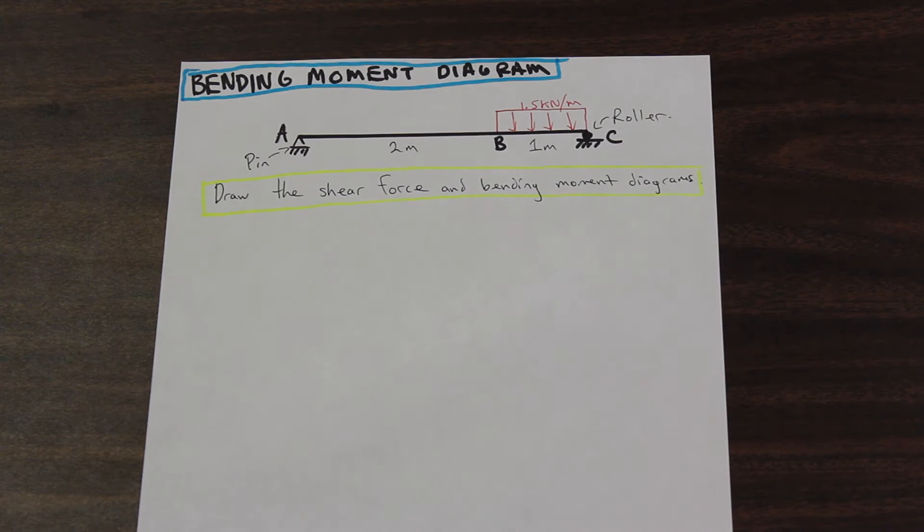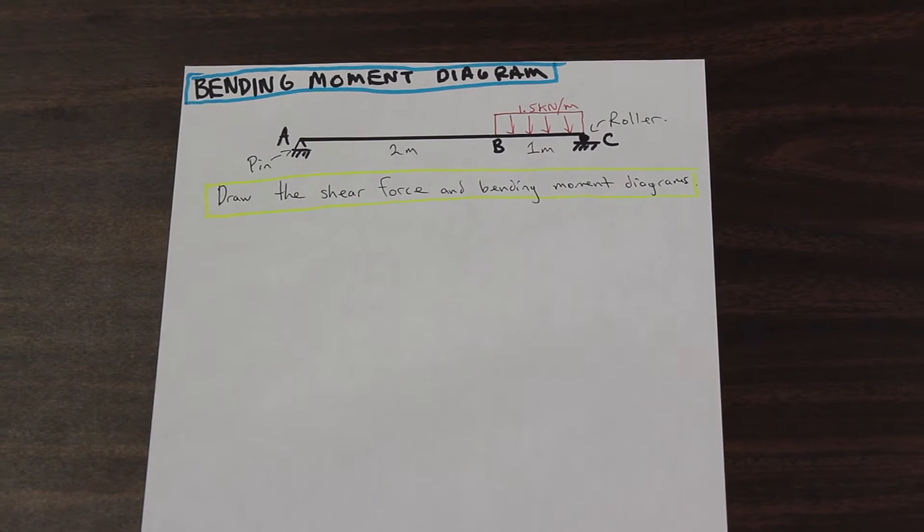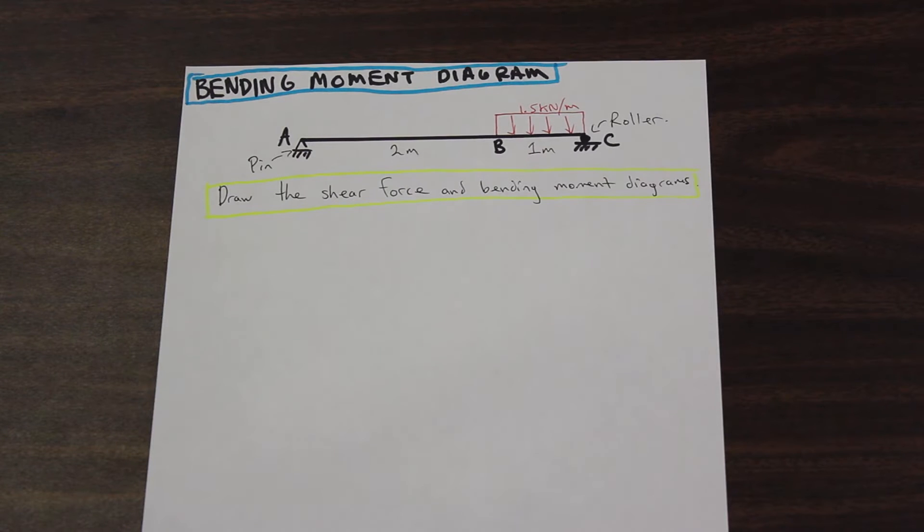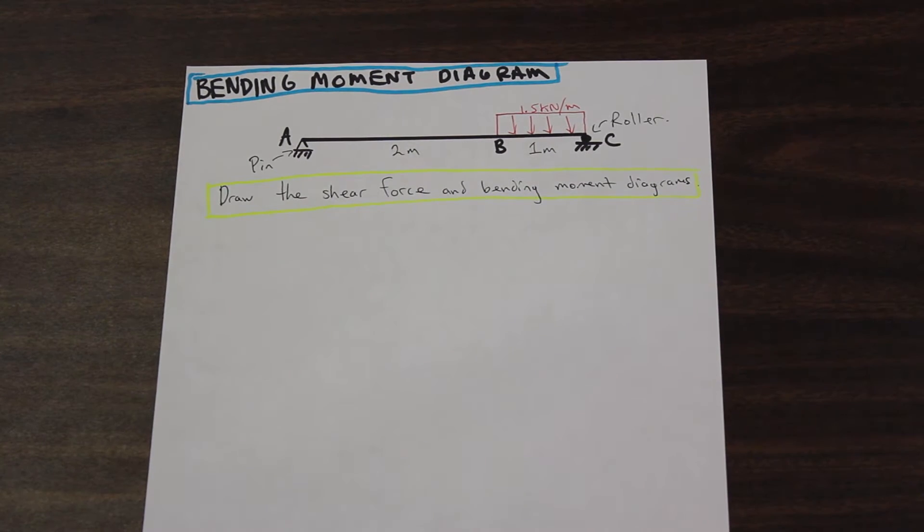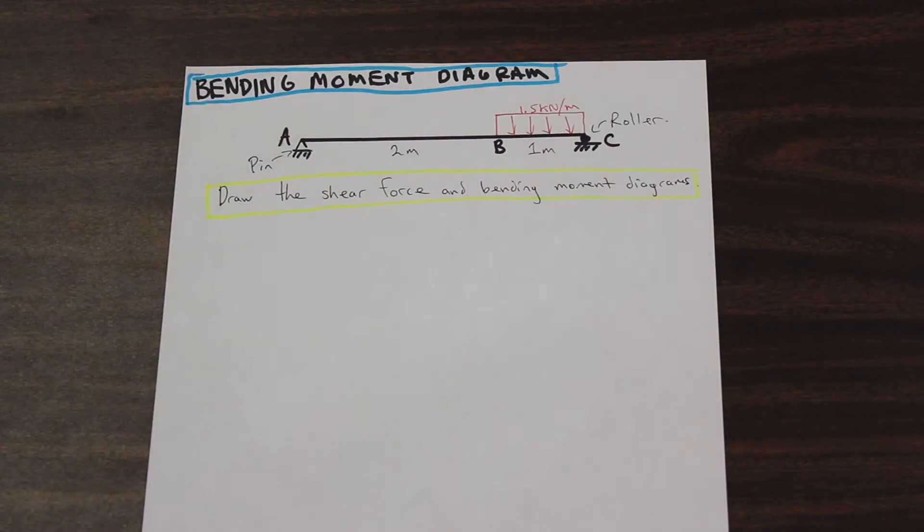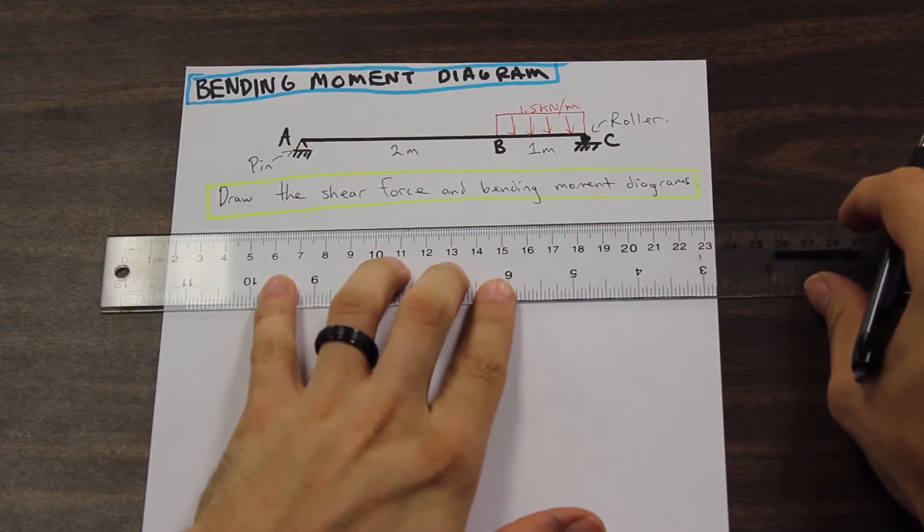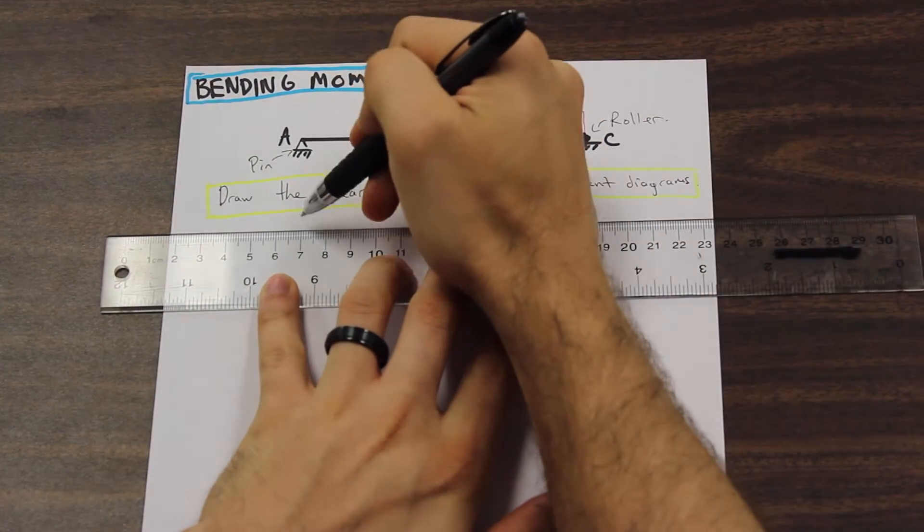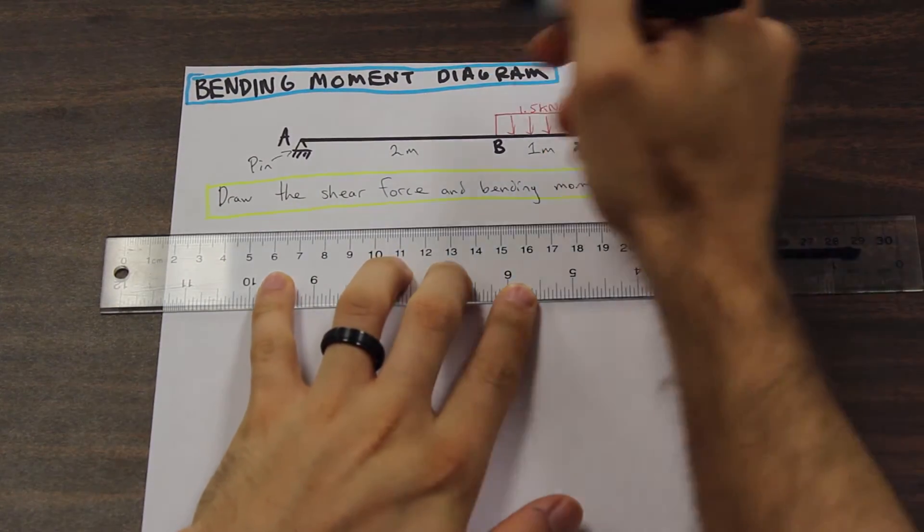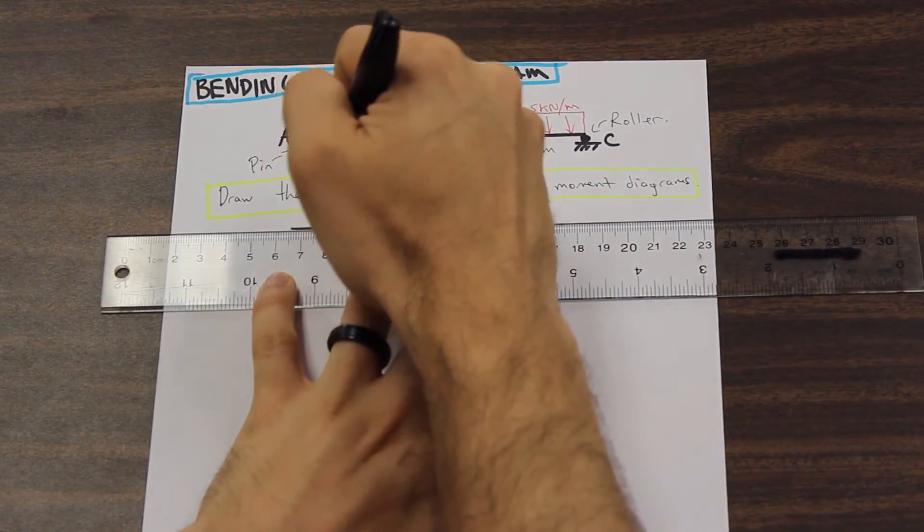And the question is asking us to draw the shear force and bending moment diagrams. So when we have a problem like this on the exam, the first step is to find the reactions. We're going to find the reactions at both supports. That's always the first thing that we're going to do.